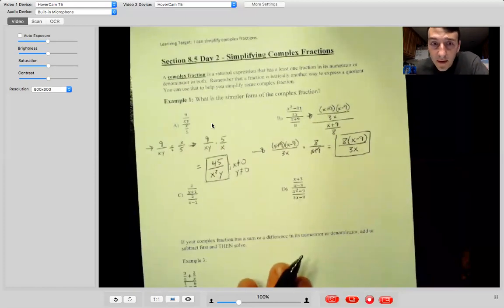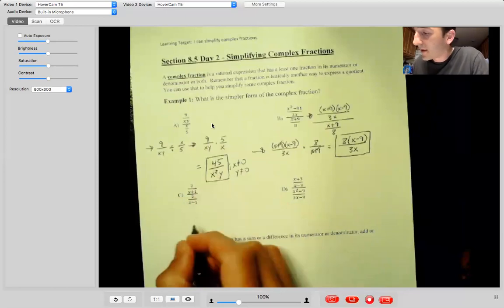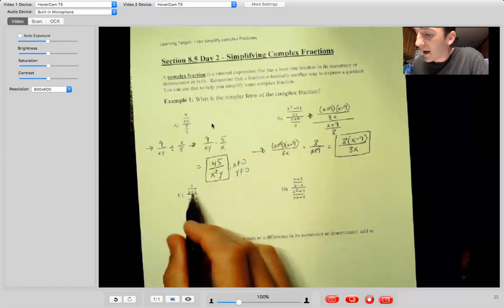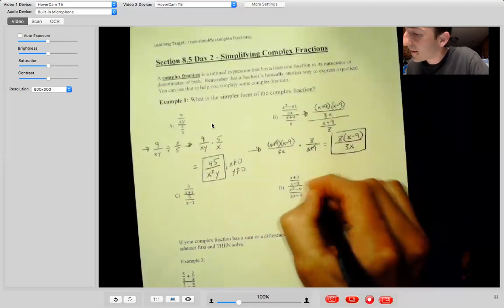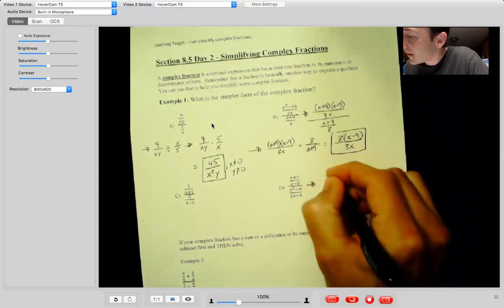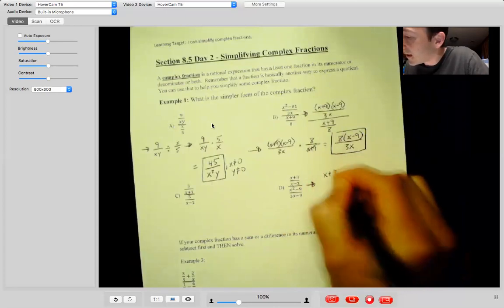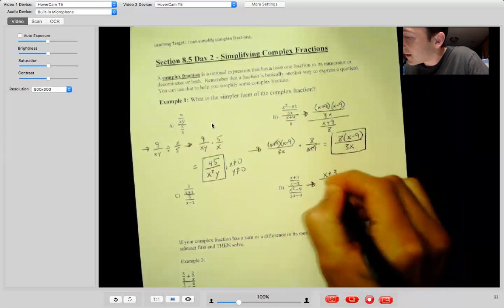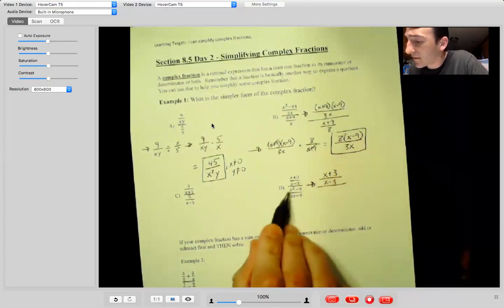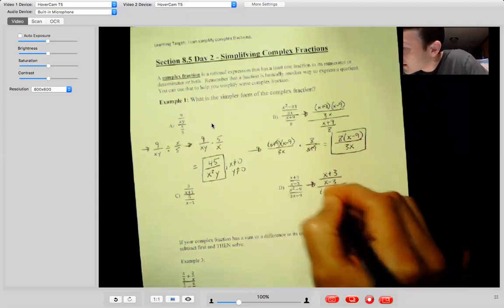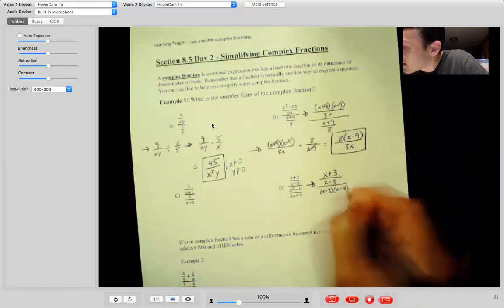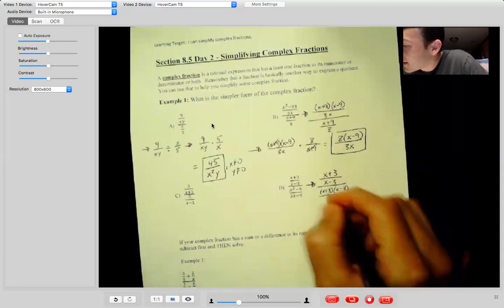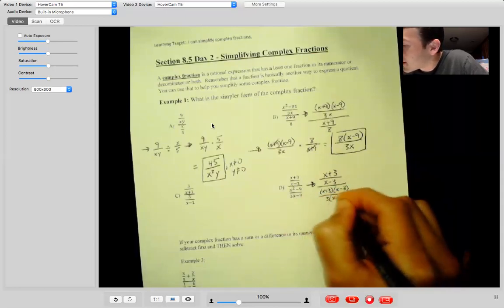The next problem, I'll just actually skip that one and do D. So we'll go ahead and factor first. That's going to give me X plus three over X minus three. Nothing to factor there. Here's what we can factor, X plus three times X minus three. And then we can factor a three out of that, three times the quantity X minus three.